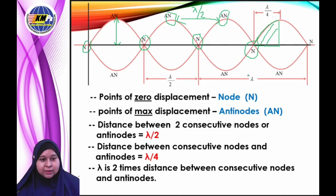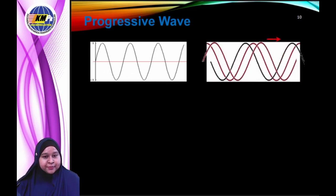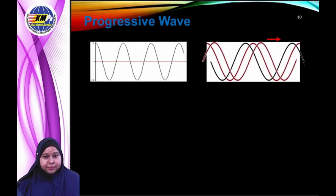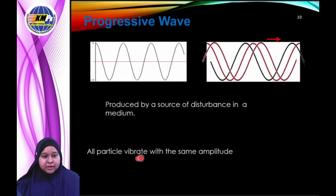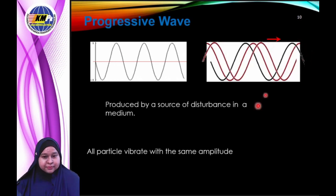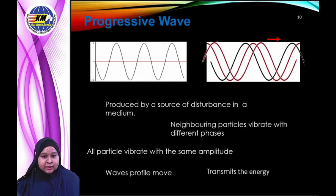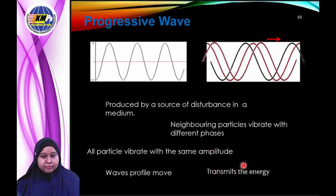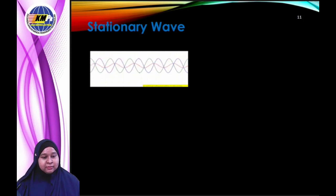Progressive wave. Look at the animation and this picture. When a wave starts from a point in a medium and propagates in all directions and never returns, it is called a progressive wave — produced by a source of disturbance traveling onward. All particles vibrate with the same amplitude, but the phase changes continuously. A progressive wave transfers energy from one place to another without transferring matter, and no particle is permanently at rest.